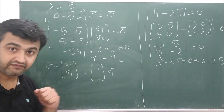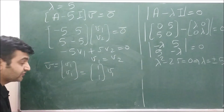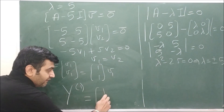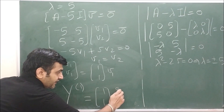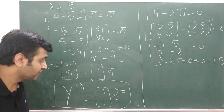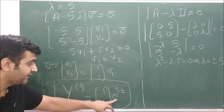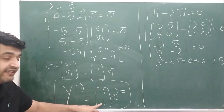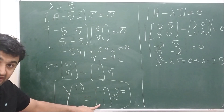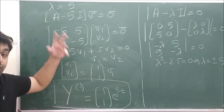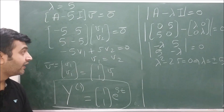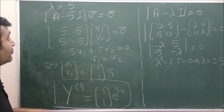The first solution is y1 = eigenvector · e^(λt), so y1 = [1, 1]ᵀ · e^(5t). That means the first component is e^(5t) and the second component is also e^(5t). If you plug this into the system it will satisfy both differential equations.